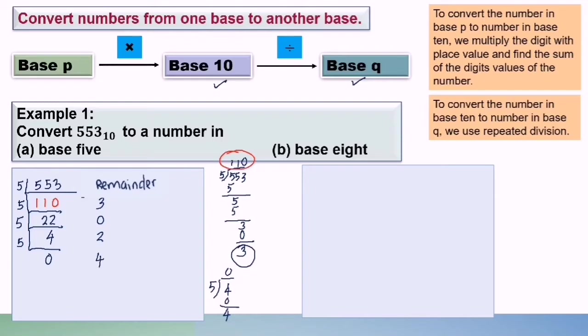The division is continued until digit 0 is obtained. So now we have obtained 0. The answer is read from bottom to top: 553 base 10 equals 4203 base 5.